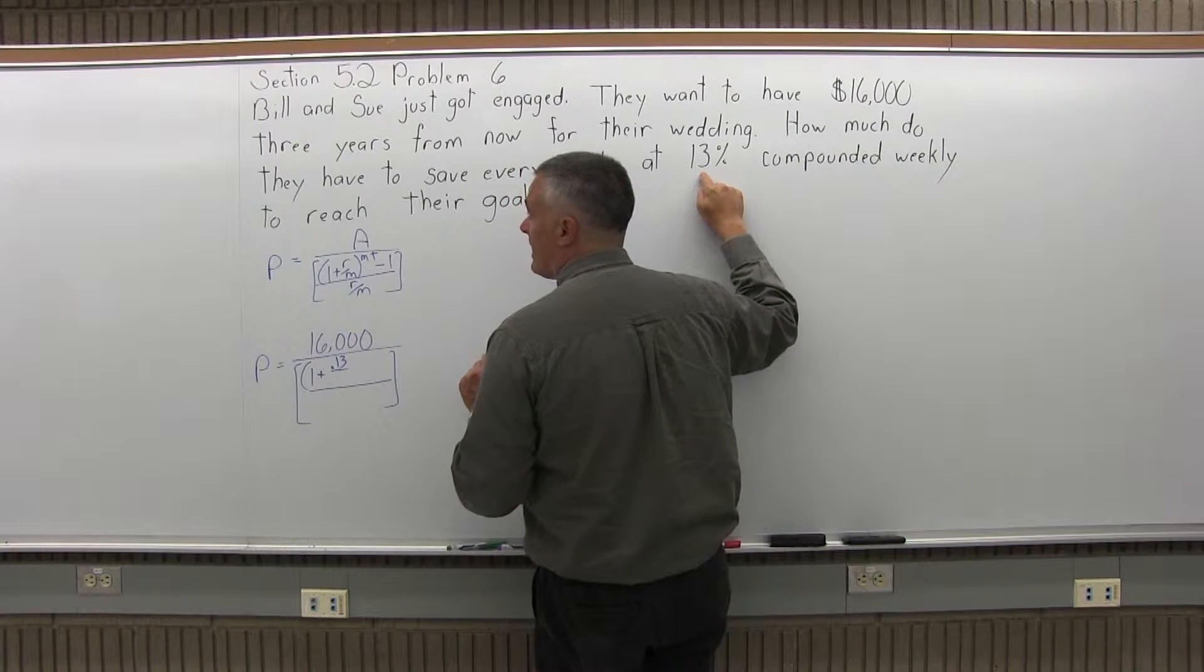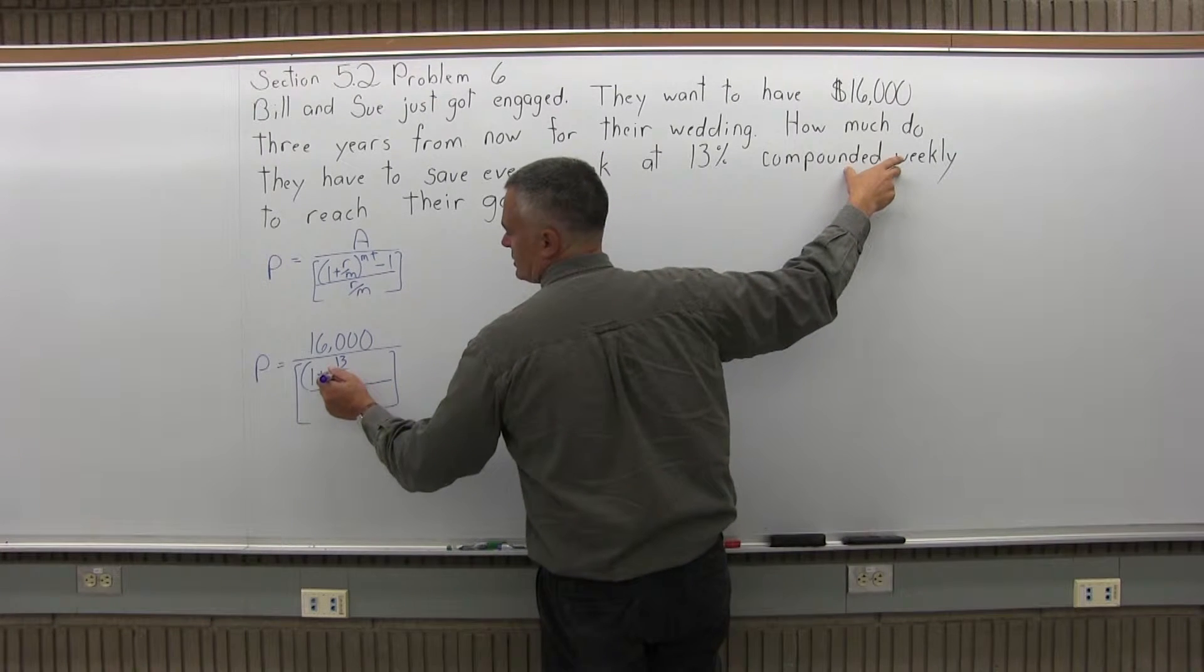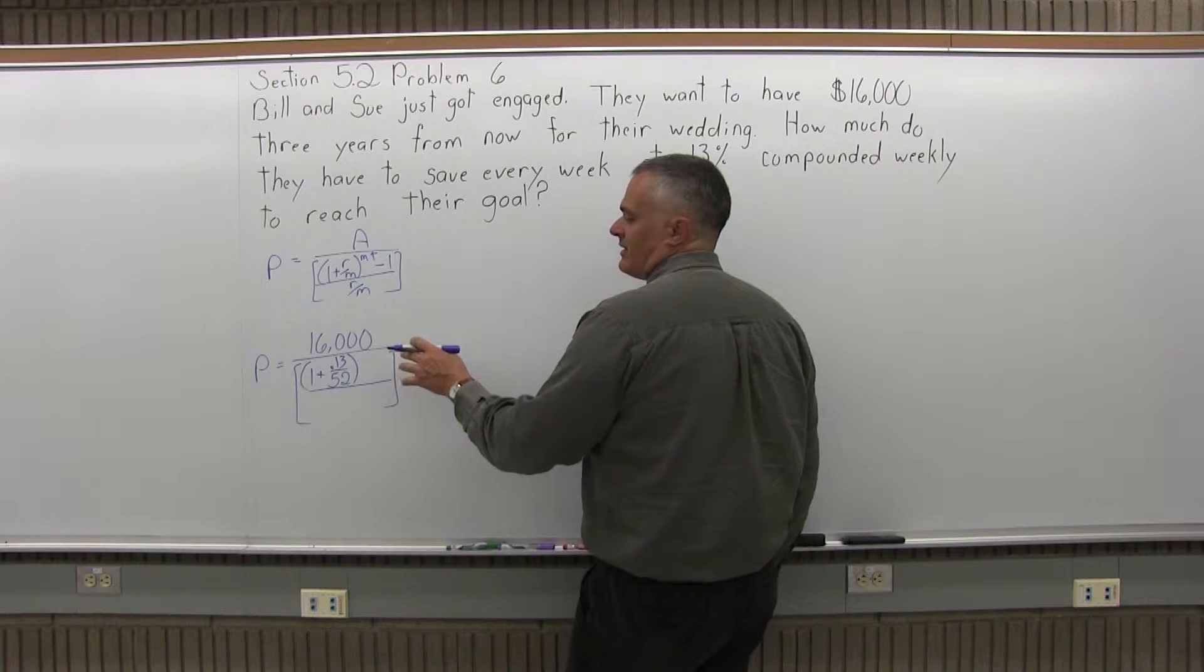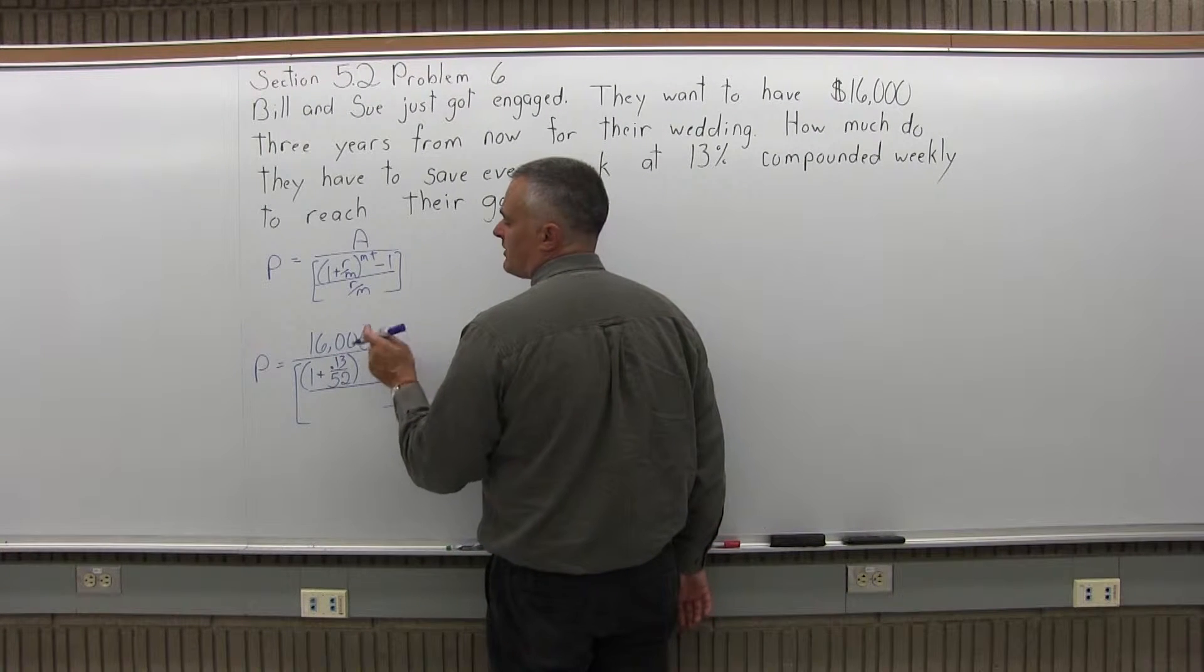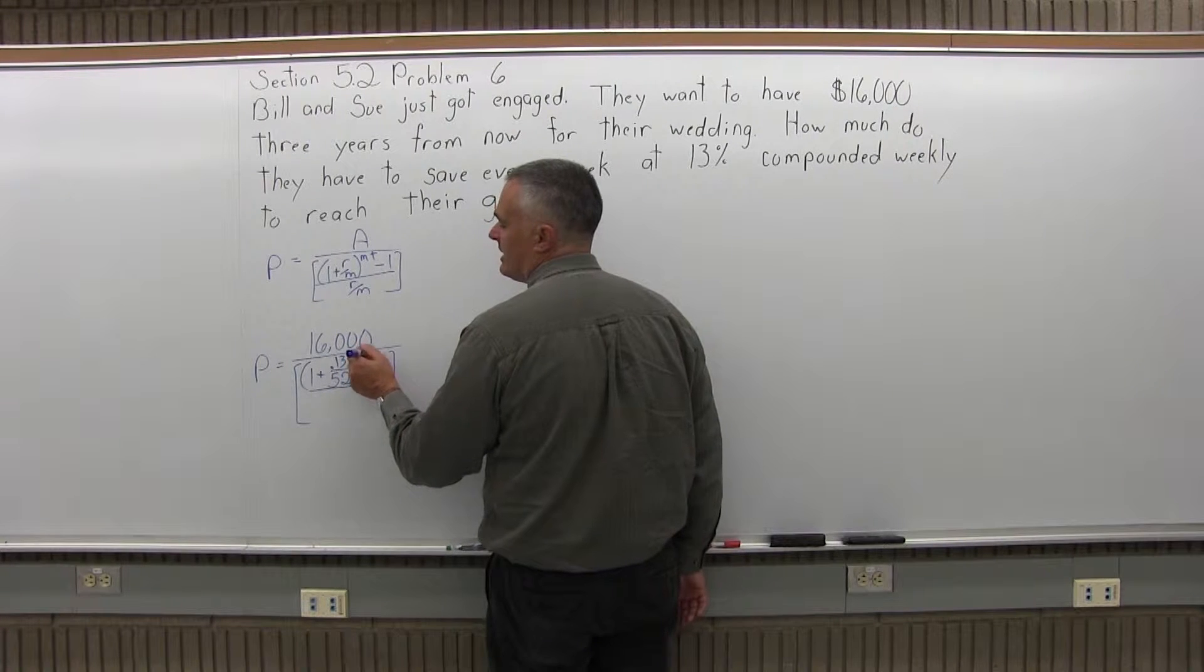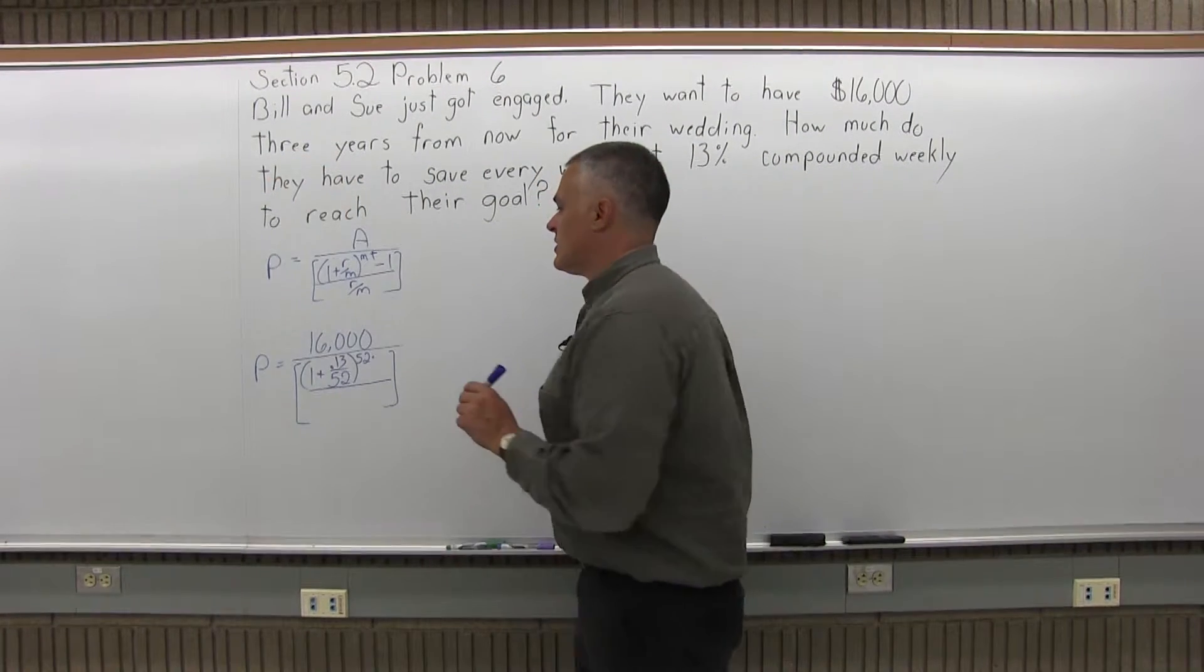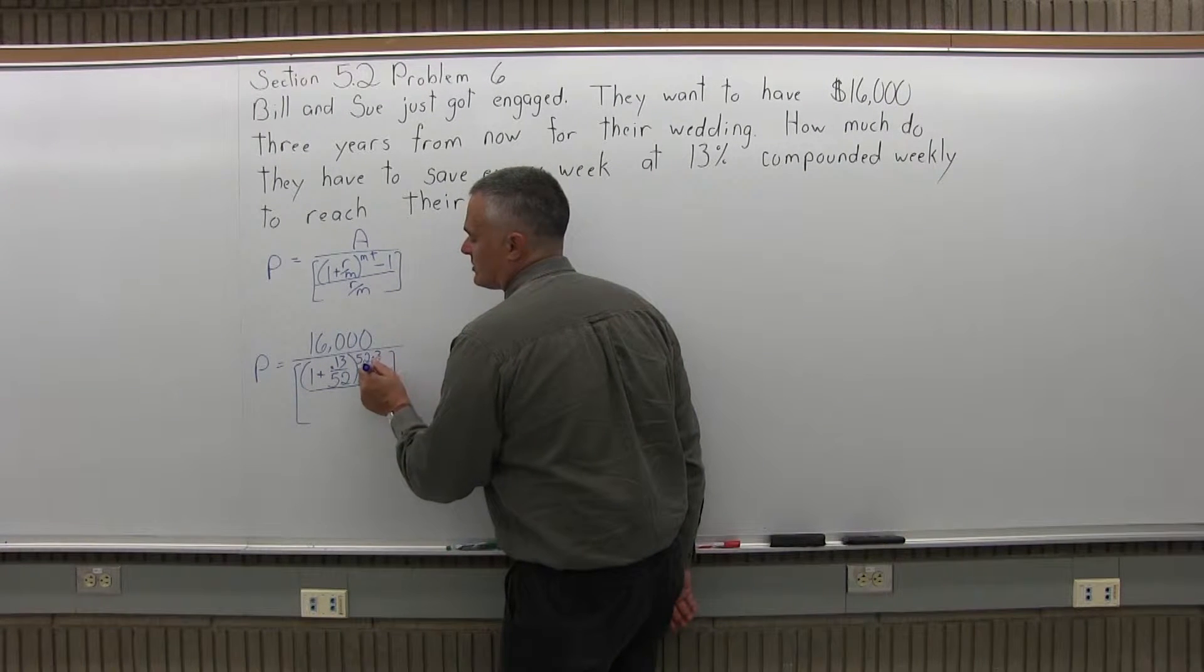And over M. Now the type of compounding for this is compounded weekly. So M is 52 for weekly compounding because there are 52 weeks in the year. And that is in parentheses, 1 plus 0.13 over 52. It has an exponent of M times T. So M is 52 for the type of compounding, T is the number of years. So they want to have that money three years from now, that's when their wedding is going to be. So it's 52 times 3 for the M times T.